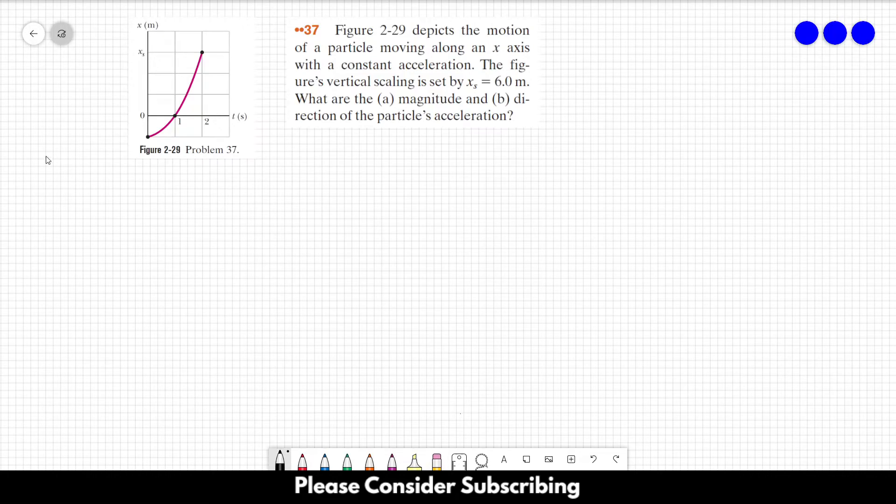Number 37, this figure depicts the motion of a particle moving along the x-axis with a constant acceleration. The figure's vertical scaling is set by x_s equals 6 meters. This means that this is 6 meters, this is 4 meters, this is 2 meters, this is minus 2 meters.